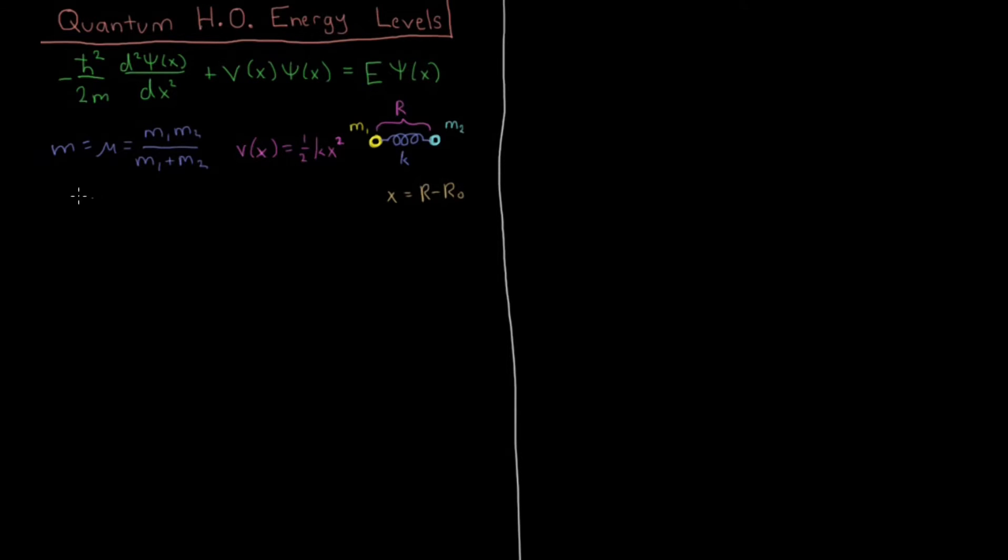Okay, so plugging that in, we're going to have minus h-bar squared, reduced Planck's constant over 2μ, second derivative of ψ with respect to x, plus 1 half kx squared ψ of x equals E ψ of x. And this energy is what we're trying to solve in addition to this wave function.